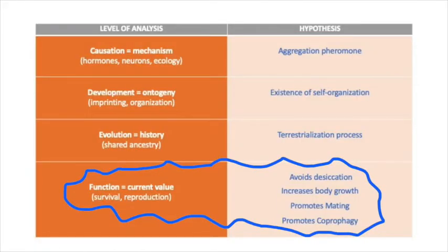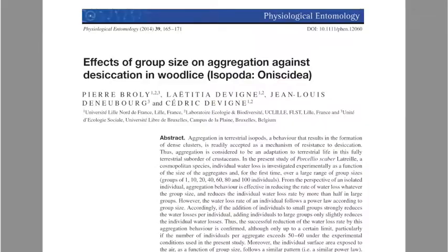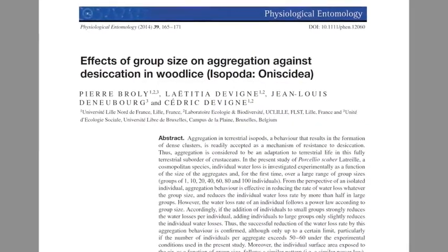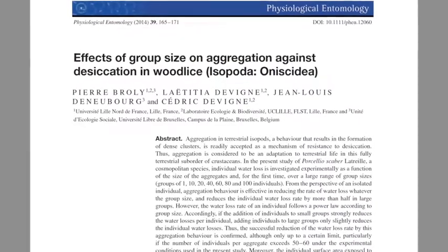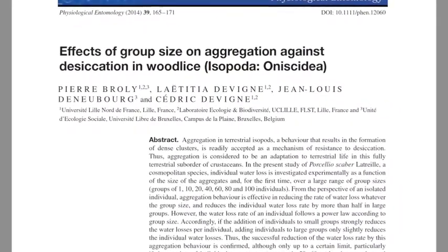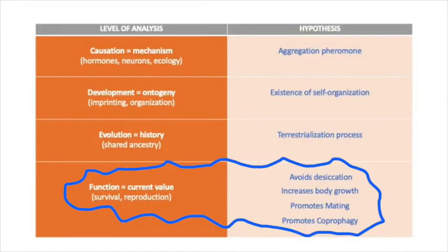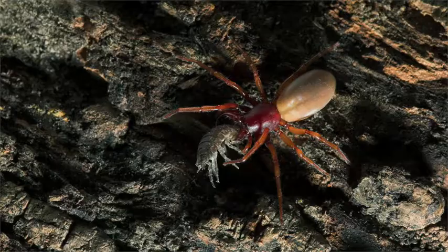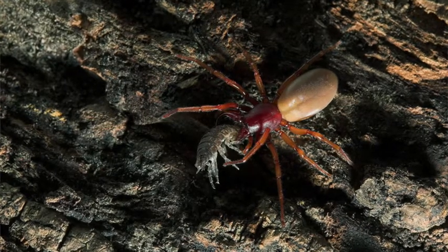Now what is the actual function of aggregation? Most importantly, it functions as a way to avoid desiccation. Research has shown that individuals tend to lose less moisture when aggregated, which is crucial for the survival of woodlice that are very sensitive to changes in humidity. As mentioned in module 6 of COG books, group life has many positive effects, such as predator avoidance. It is possible that woodlice also benefit from dilution and selfish herd effect, but this needs more research.